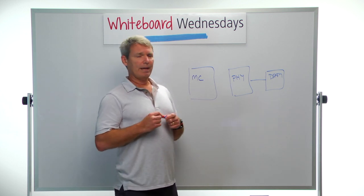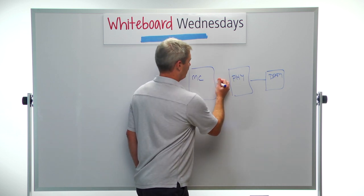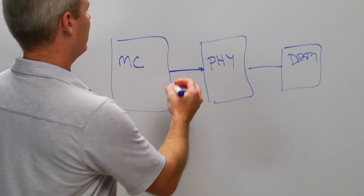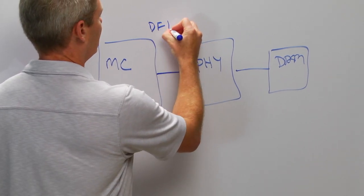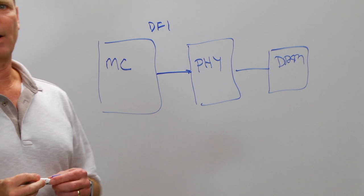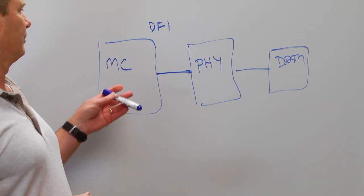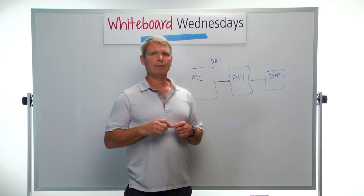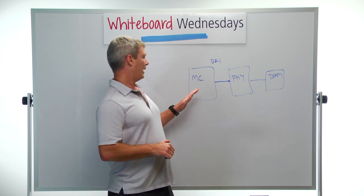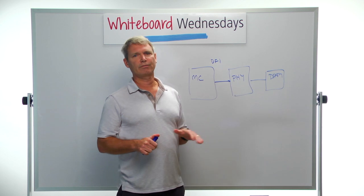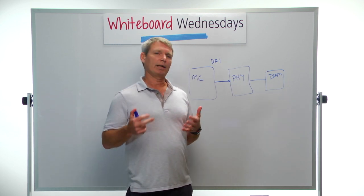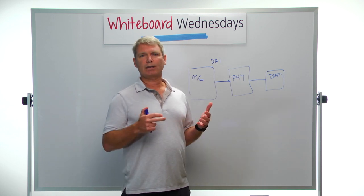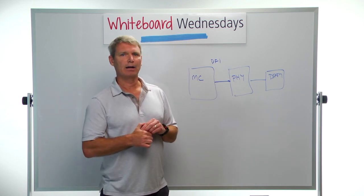That's where the LPI comes in. The LPI is actually part of the interface between the memory controller and the PHY. We have a standard interface called DFI, and one of the interfaces that's part of the DFI bus is called the LPI. The LPI is used for the memory controller to communicate to the PHY things like what is the low power state of memory and what is the required wake-up time of the PHY.